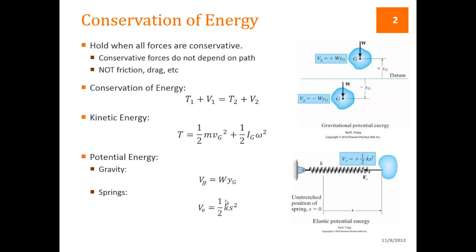The potential energy due to a spring is 1/2 times the spring constant k times s squared, where s is the stretch in that spring. So the potential energy due to a spring is always positive. The potential energy due to gravity is positive or negative based on the datum that is chosen for the problem.